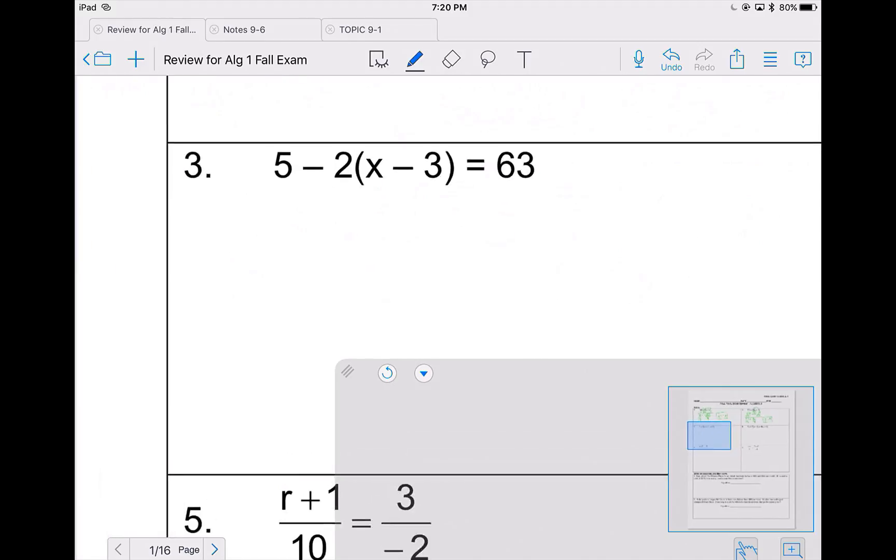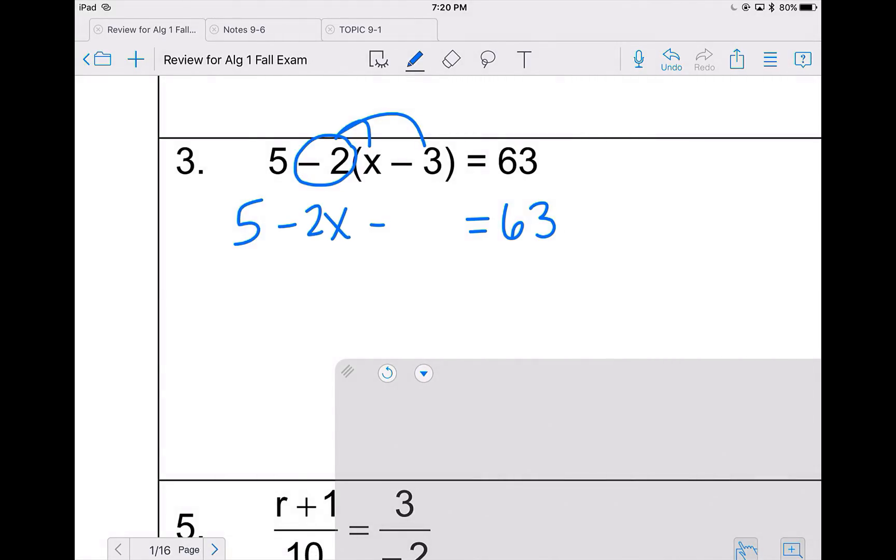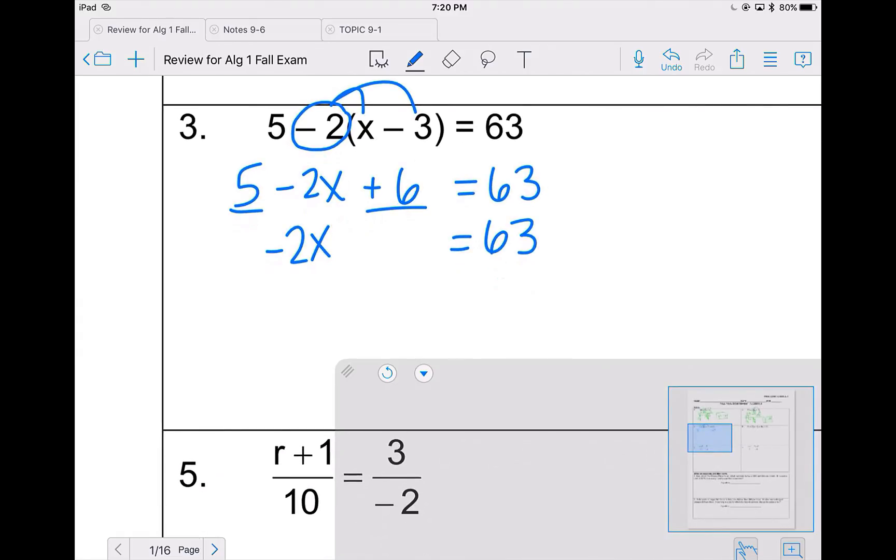For problem 3, I need to get rid of my parentheses by distributing the negative 2. Note that the 5 has no change for the very beginning step. The 5 stays exactly the same. It is out not next to the parentheses, so I will not do anything with that. Negative 2 times x is negative 2x. Negative 2 times negative 3 is a positive 6. From here, I need to combine my like terms. So the negative 2x and 63 stay as they are. 5 plus 6 is 11.